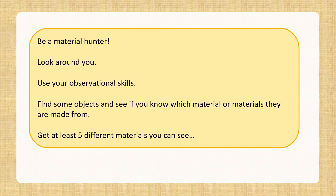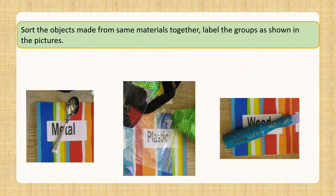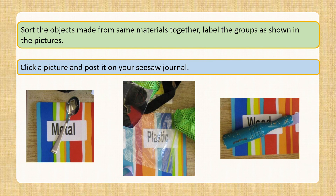Now, let's be material hunters. Look around you. Use your observational skills. Find some objects and see if you know which material or materials they are made from. Get at least five different materials you can see. Then arrange the materials you have collected into groups and label your groups just like it is shown in the pictures. Click a picture of your sorting and post it on your Seesaw journal. Hope you are enjoying using the Seesaw journal — you will be learning a lot of new things using this.